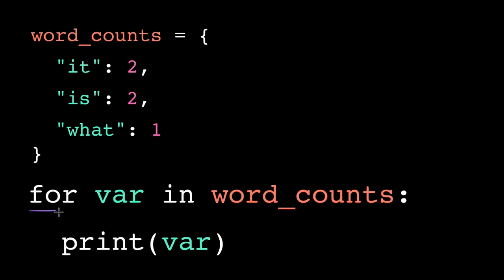We have the keyword for, the loop variable name, the keyword in, and then the dictionary name, followed as always by a colon.